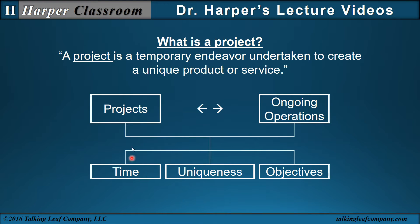First, time. Projects have a start and a stop. Ongoing operations start and just keep going. Next is uniqueness. Each project should be considered as a unique project. The conditions can be different, the challenges can be different, and changes will happen. Ongoing operations require consistency and efficiency so you can become more productive.